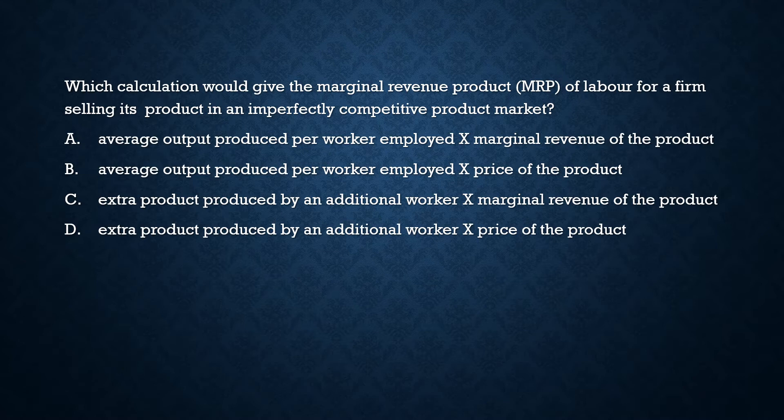Let's check the options. Option A: the average output produced per worker employed multiplied by the marginal revenue of the product. Option B: the average output produced per worker employed multiplied by the price of the product. Option C: the extra product produced by an additional worker multiplied by...